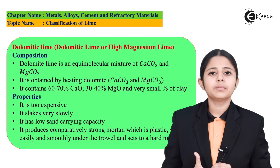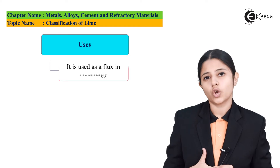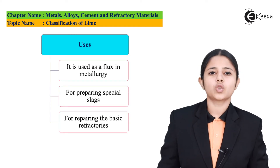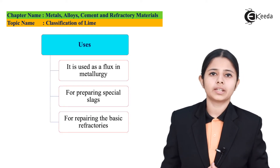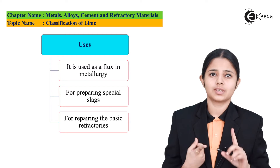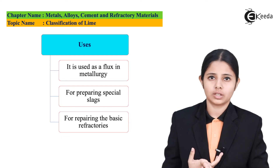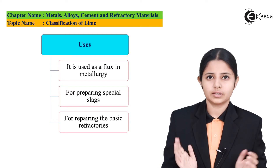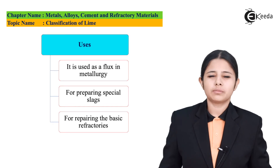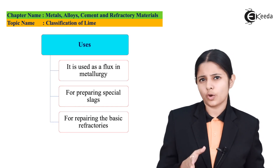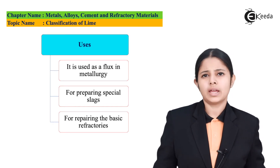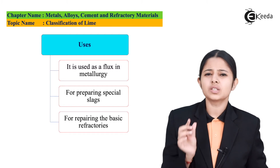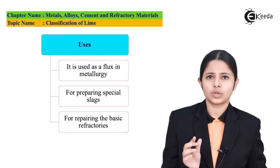The last type of lime is dolomitic lime. Dolomitic lime is obtained by heating a mixture of CaCO₃ and MgCO₃, that is by basically heating dolomite. This type of lime consists of 60–70% of CaO and 30–40% of MgO. It has a very small proportion of clay in it.